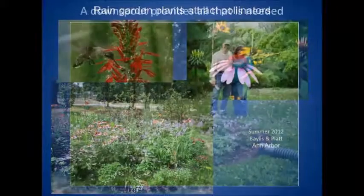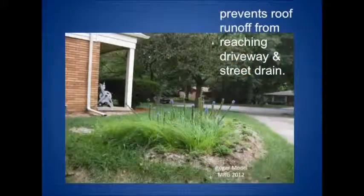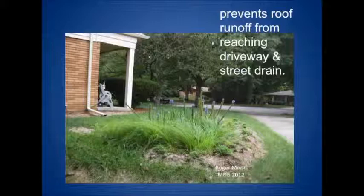For maintenance, a downspout is about all you need — no fertilizers, chemicals, or anything else. This is a typical setup where the rain garden is placed to intercept the flow from the downspout to the adjacent driveway and hence into the street drain.